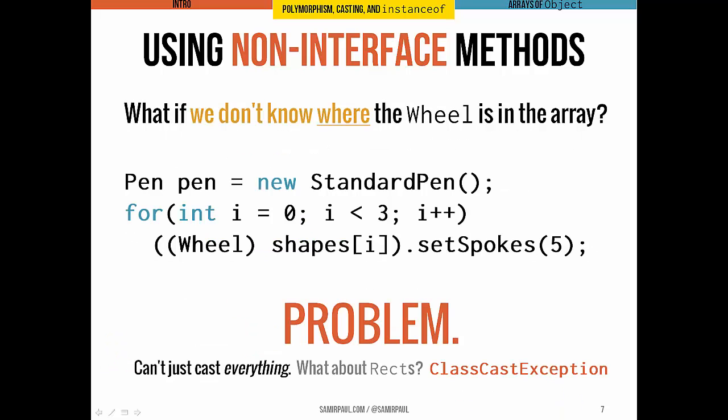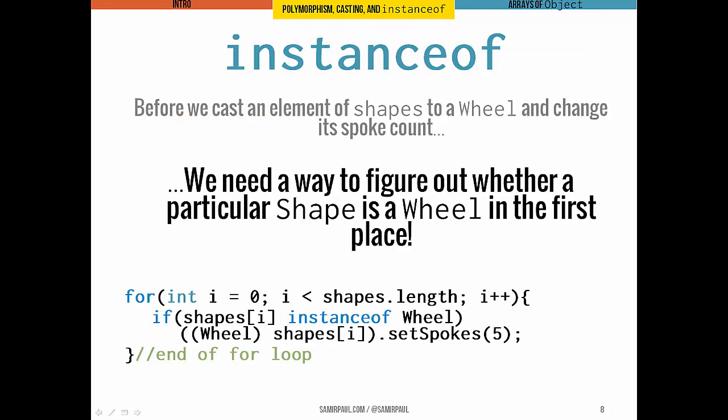But things get hairier if we don't actually know where the wheel is in some array of shapes. We can't just manually index into the array, get a single element and cast it and do whatever we need. If we didn't know where the wheel was, a loop is sort of a sensible solution and we could try going through every element of the array. So here that's exactly what we do. We've got a pen instance and we loop through every element in the array and each one we cast to a wheel and then call setSpokes. The problem is you can't just cast everything. Not all the elements in the array are wheels. And if we try to cast an object to a type that is not its actual type, we end up with a class cast exception. So we can't cast a rect to a wheel. It just doesn't work, it doesn't make sense if you think about it. So in this case, we first have to determine that a shape is a wheel before we try to cast it. And this is where Java's instanceof operator comes to the rescue.